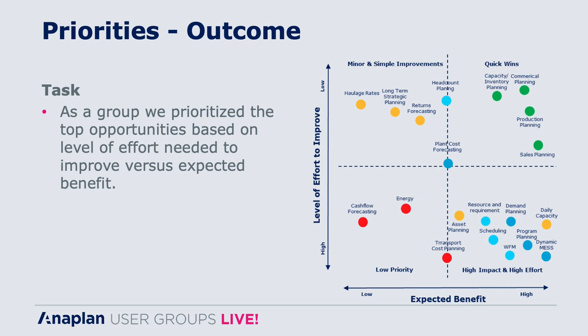Once we've got those two ratings, it allows us to put the different use cases into various quadrants. We can see we've got quick wins, high-impact but high-effort items, minor and simple improvements, and a number which are low priority — things that may drop off the roadmap over time or be pushed to the end. This is really important because when you go through this exercise, you'll find you identify so many use cases — planning across every organization is complicated. This is a technique to work out where best to spend your time.